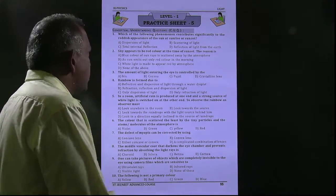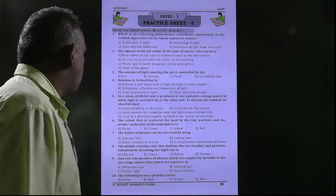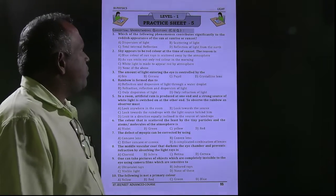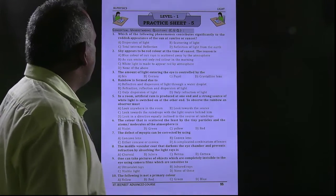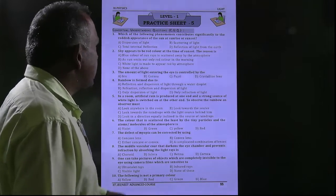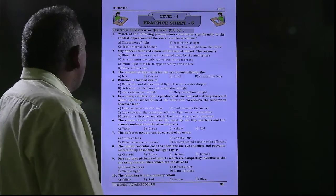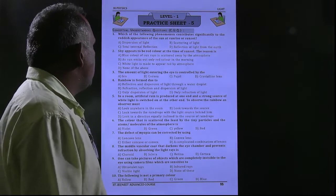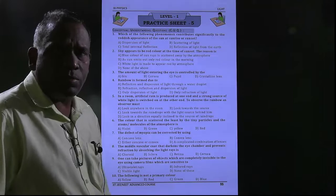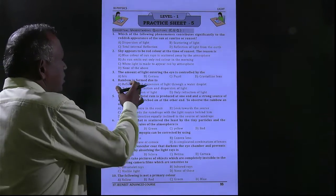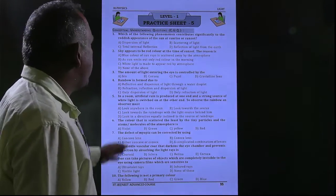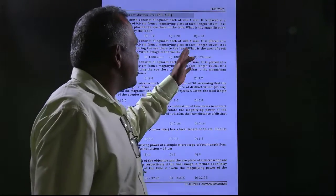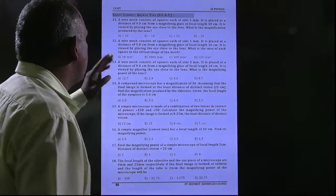We already discussed light in practice sheet 5. The questions covered include: which phenomena contribute to the reddish appearance of sunlight at sunrise, scattering of light, why the sky appears red because blue color is scattered away by the atmosphere, the amount of light entering the eye controlled by the iris, and the wire mesh square questions — all these were already discussed.